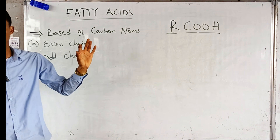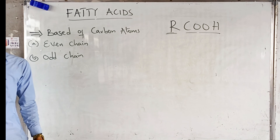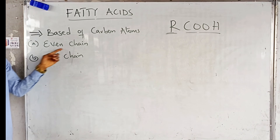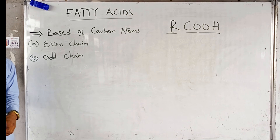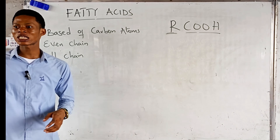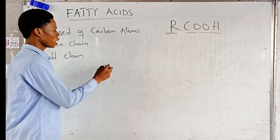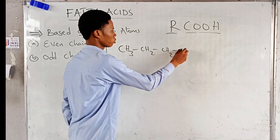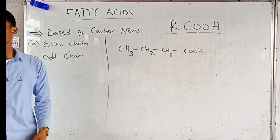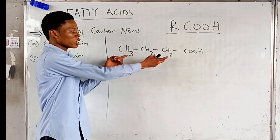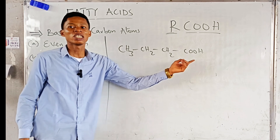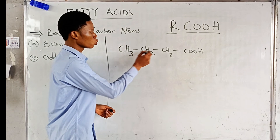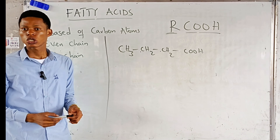We can classify fatty acids based on the total number of carbon atoms present into even-chain fatty acids and odd-chain fatty acids. Even-chain fatty acids contain an even number of carbon atoms. For example, if you look at a structure with four carbon atoms and a carboxylic acid functional group — count the carbons: one, two, three, four — four is an even number, so this is an even-chain fatty acid.